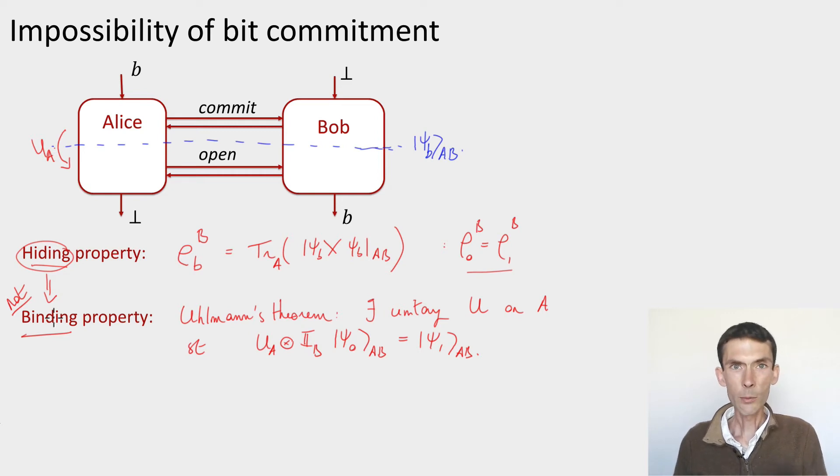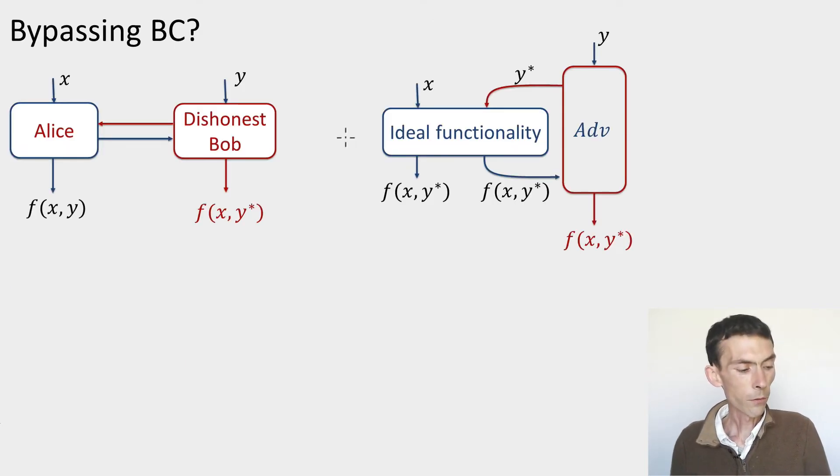The idea is going to be the same for the impossibility of bit commitment that we just saw. So let's look at a general function, f. For simplicity, I'll take Alice and Bob to have the same output. So f_a is equal to f_b here. Alice has an input x, Bob has an input y. This should both output f of x and y. And now let me imagine that I managed to construct a secure protocol for this function f, secure against dishonest Bob.